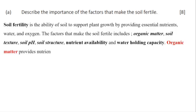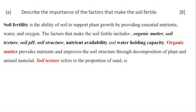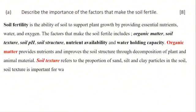Organic matter provides nutrients and improves the soil structure through decomposition of plant and animal material. Soil texture refers to the proportion of sand, silt, and clay particles in the soil. Soil texture is important for water retention — such as in loam soils — and it also allows for plant roots to penetrate deeper into the soil, accessing more nutrients and water. Nutrient availability, such as nitrogen, phosphorus, potassium, and micronutrients, stimulates plant growth and allows the plant to grow in a healthy state.